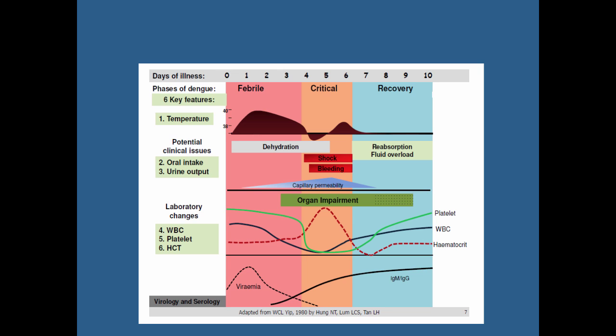The disease course has three main phases: febrile, critical, and recovery. There's an initial acute febrile phase, not as severe as malaria. The critical stage is where, if previously infected, you can develop the hemorrhagic toxic aspect, which can be life-threatening. During the critical phase is when dengue shock occurs. Typically, an immune response follows and recovery occurs — if you survive the hemorrhagic aspect, you usually make a full recovery.